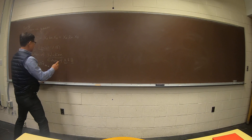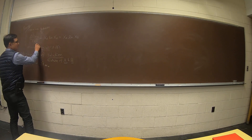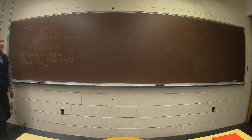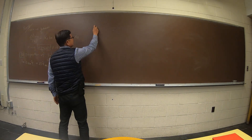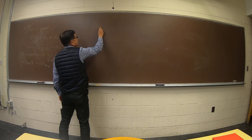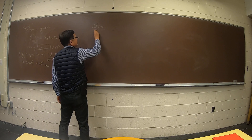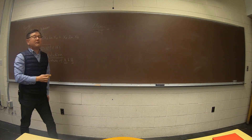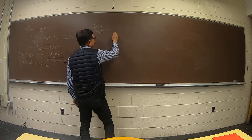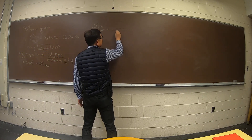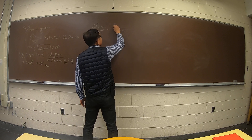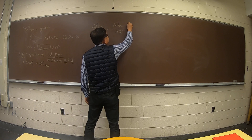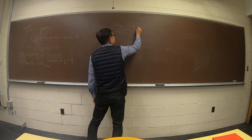So delta G mix — I'm jumping now to liquid-liquid mixtures. For liquid-liquid mixtures, delta G mix is given by the NRTL model. This is not different from what I wrote before: delta G mix equals delta H mix minus T times delta S mix.